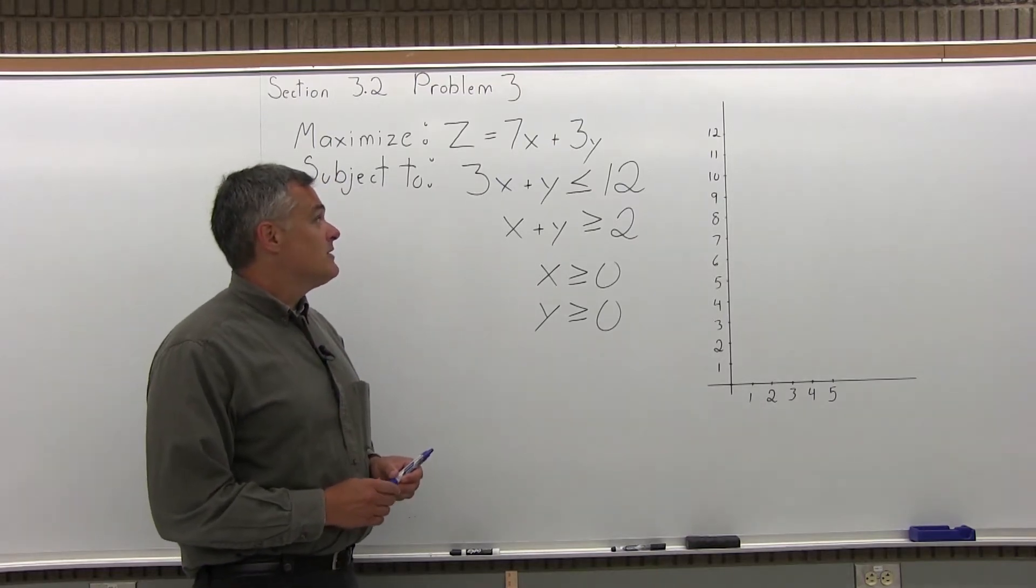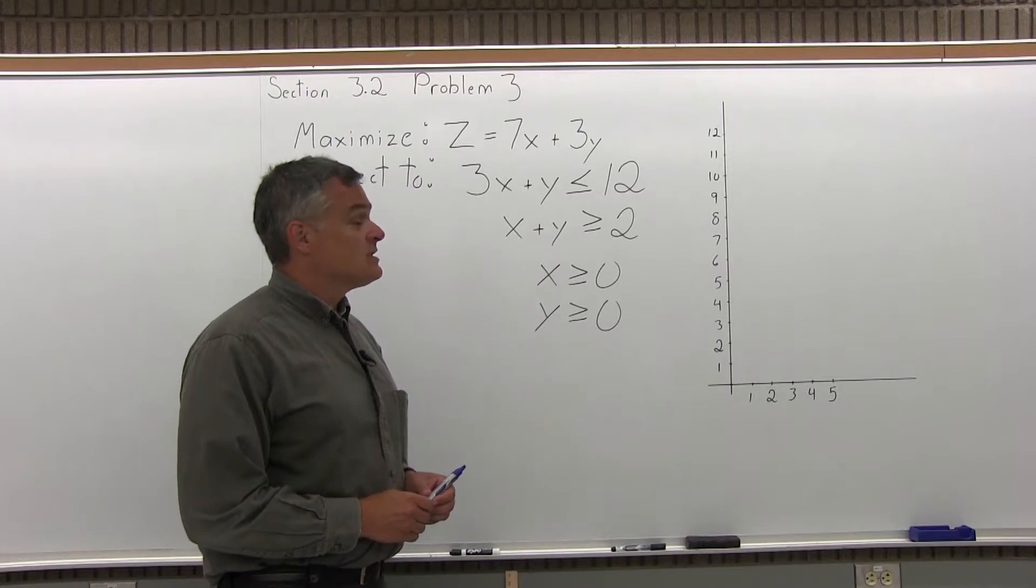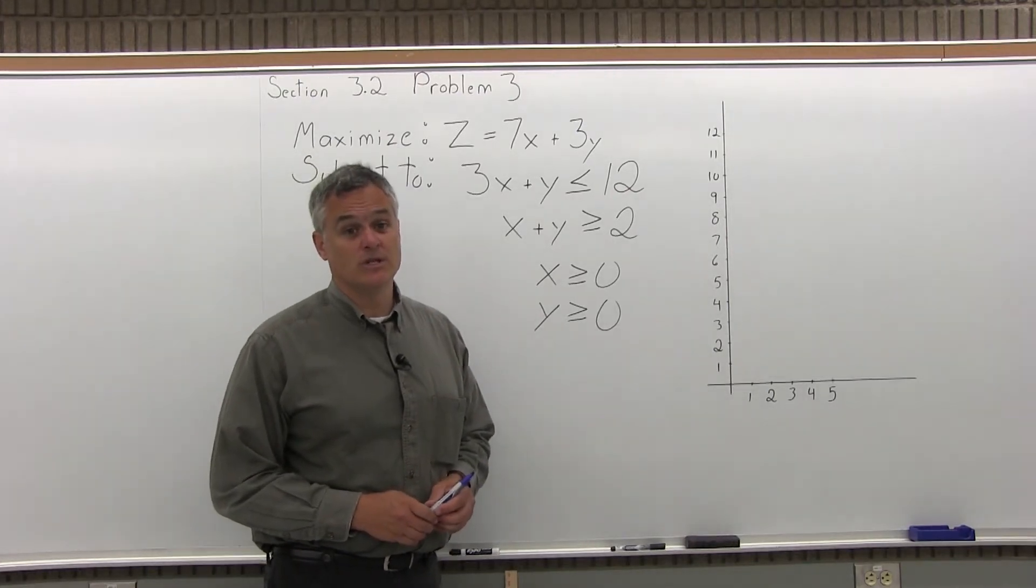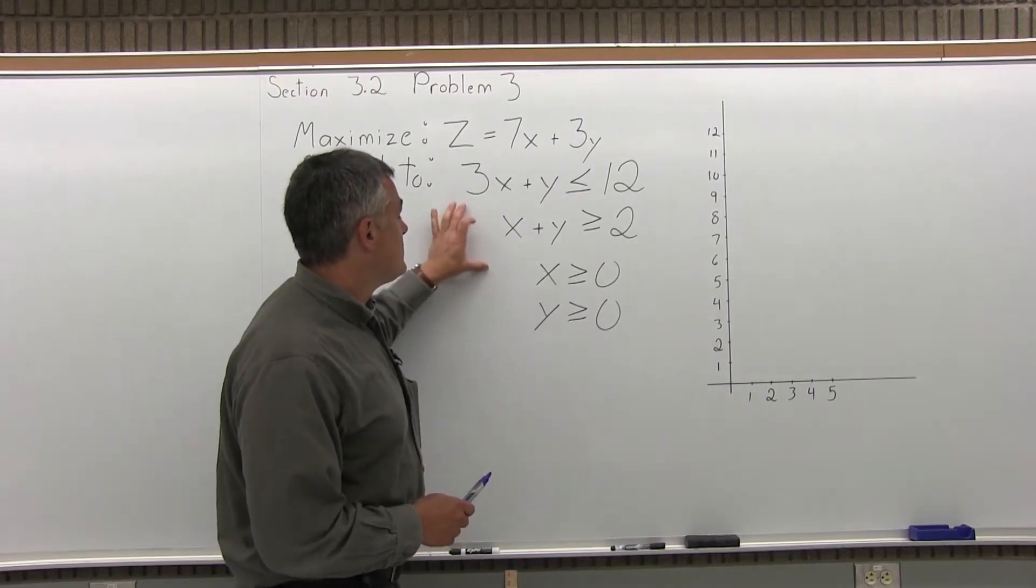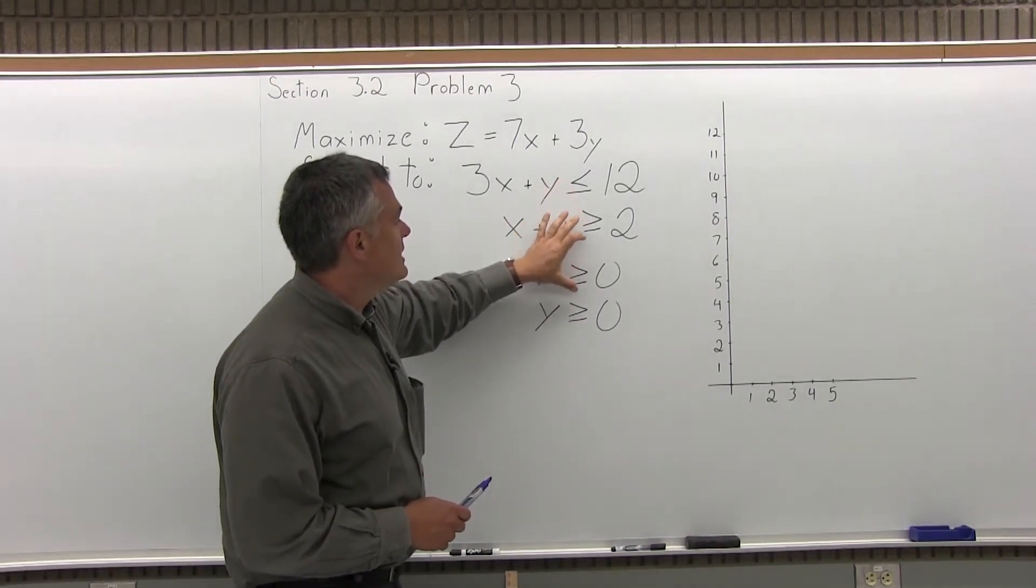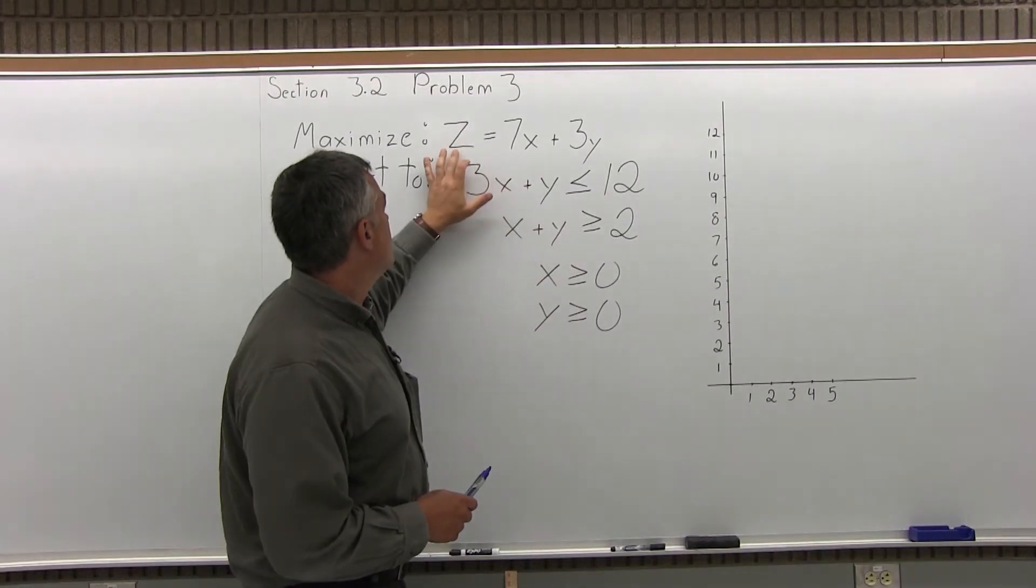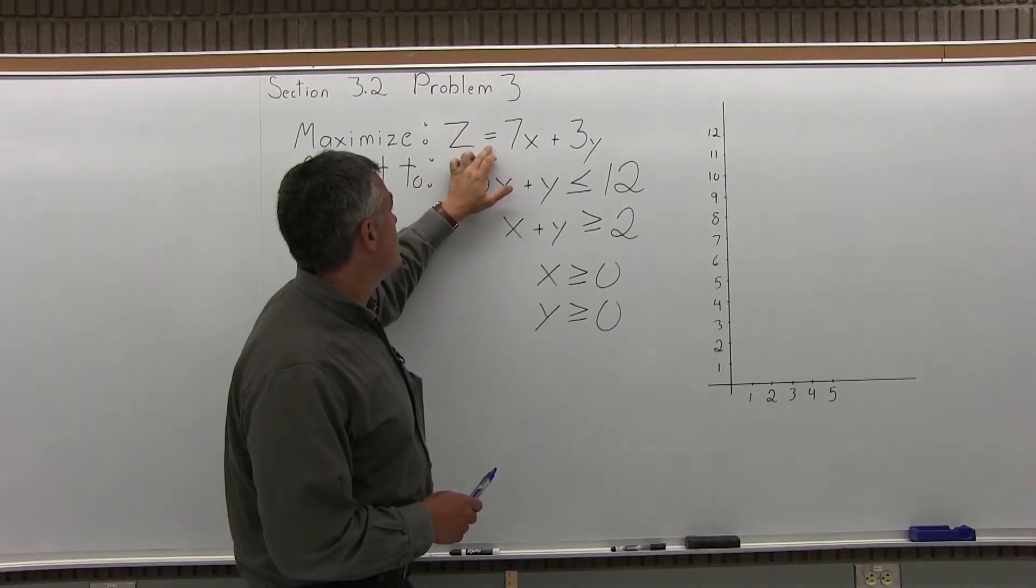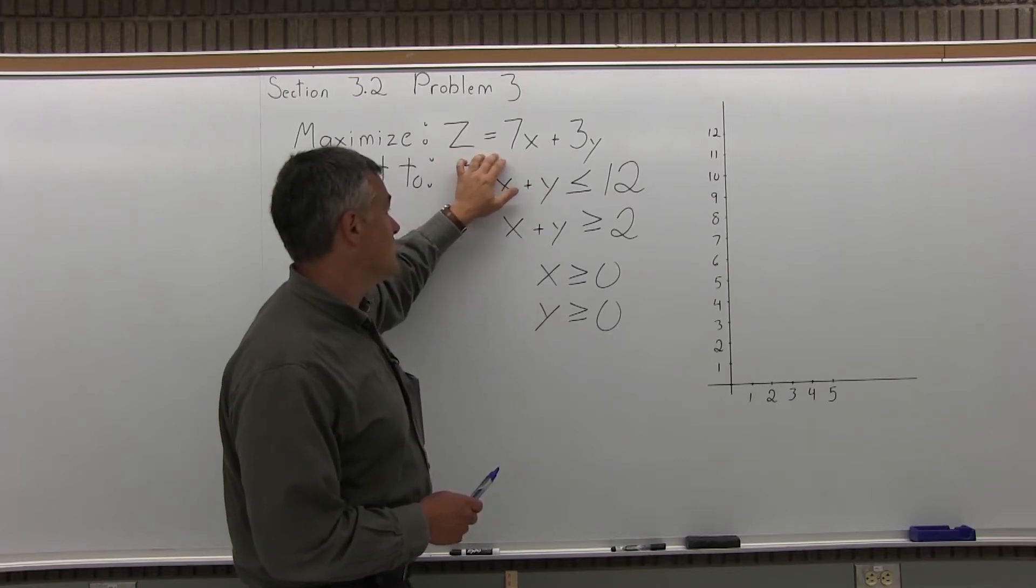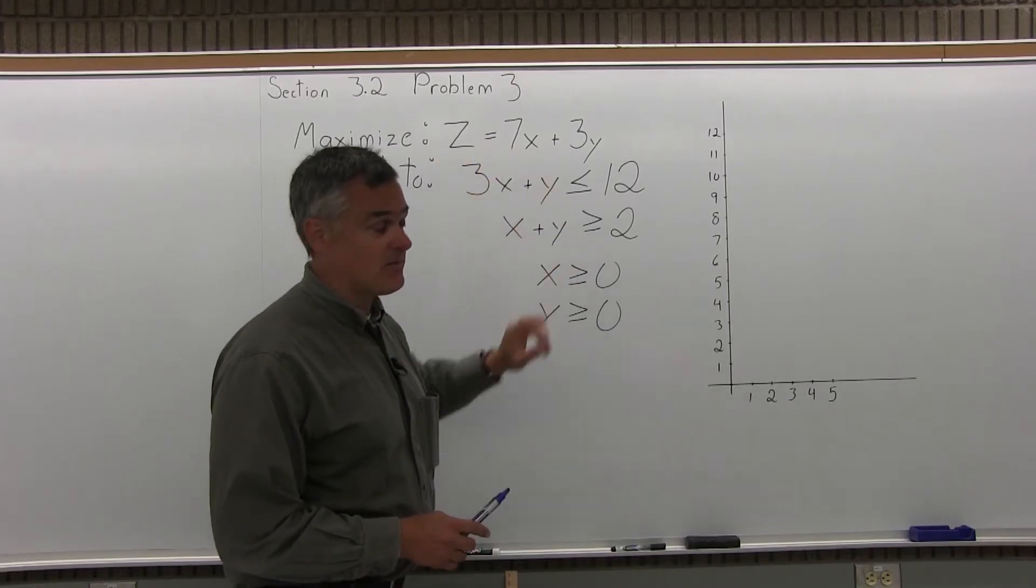So to start a problem like this, it's a four-step process. Step 1 is graph the feasible region. Your feasible region is made up of the constraints, the ones with the inequality symbols. The objective function, the problem with the equation, is not part of the graph. We'll use that later. So z equals 7x plus 3y doesn't become part of the graph.